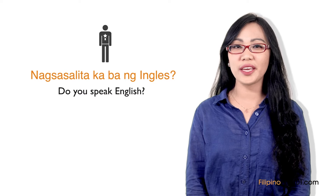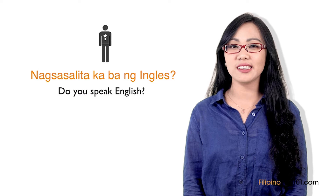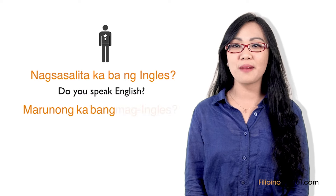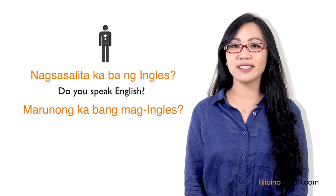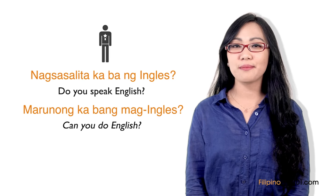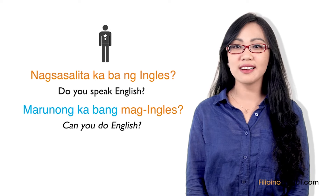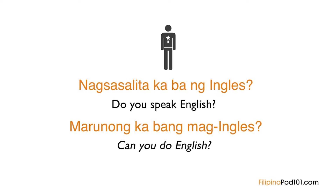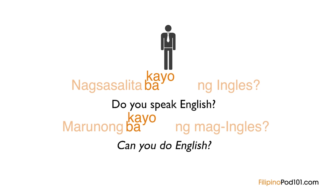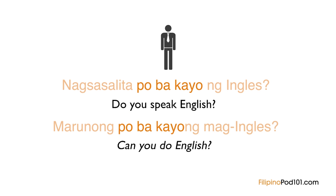Another common way to ask if someone can speak English is 'Marunong ka bang mag-Inglis?' Literally, this means 'Can you do English?' To make these formal, we change 'ka' to 'kayo' and move it after 'ba.' We also need to add 'po' as a sign of respect. Everything else stays the same.